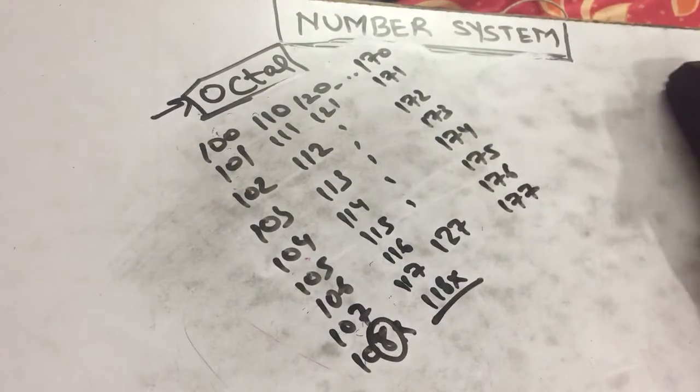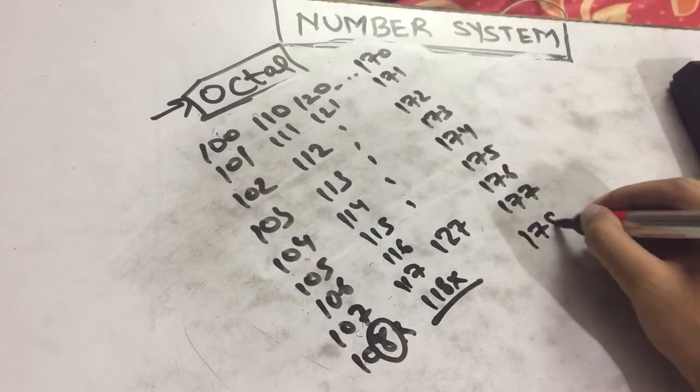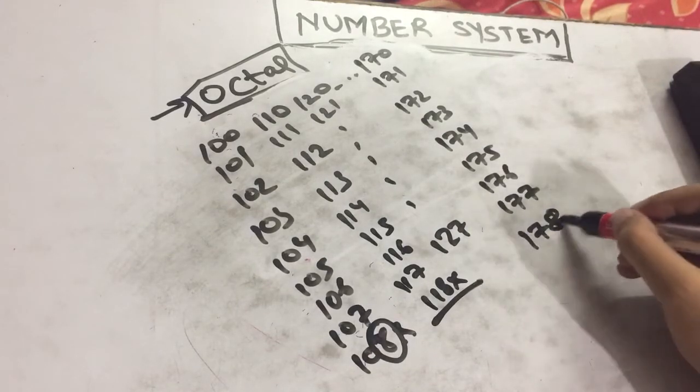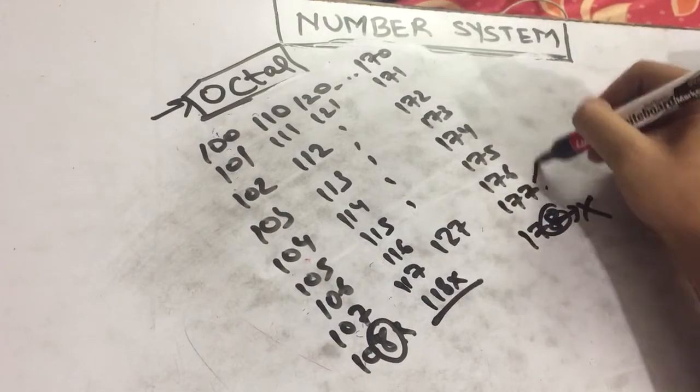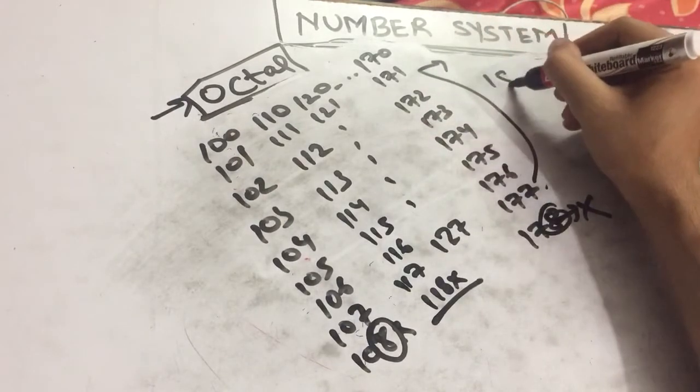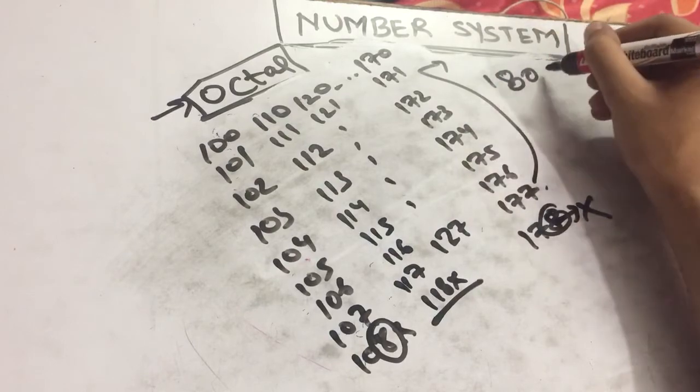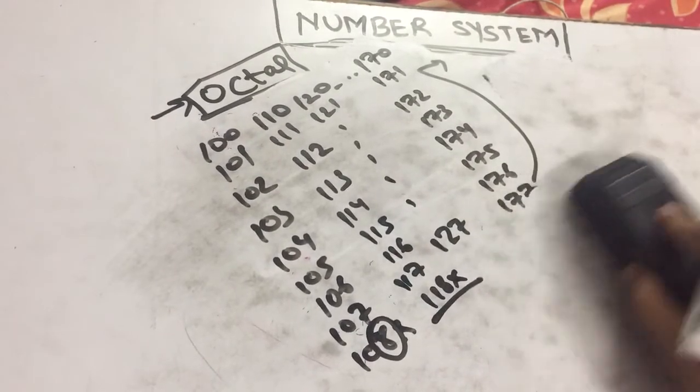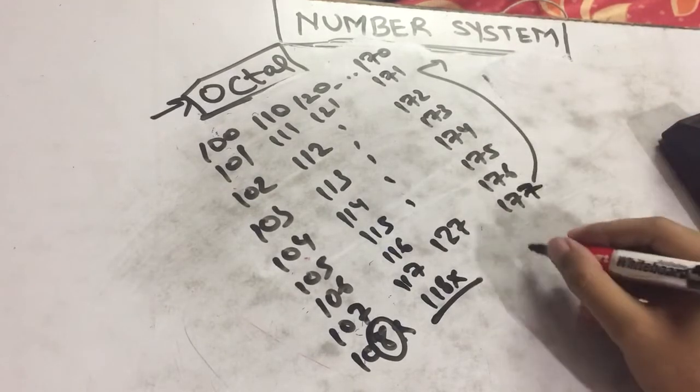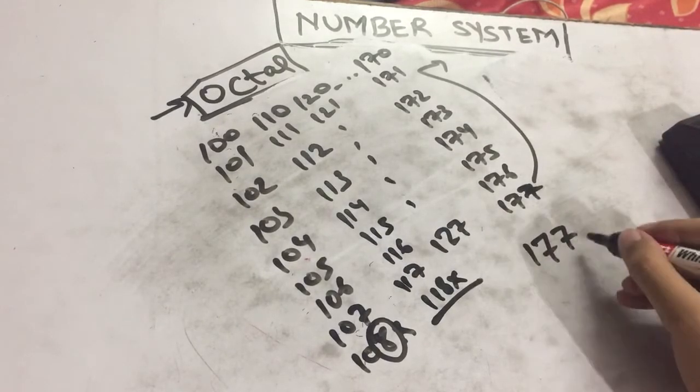121, and so on. 127. Again the confusion will occur at 170. So 170, 171, 172, 173, 174, 175, 176, 177. Again we can't write the number 178 because it has the number 8, so it's wrong. Neither can we jump to the next row and write 180, it will be wrong too.